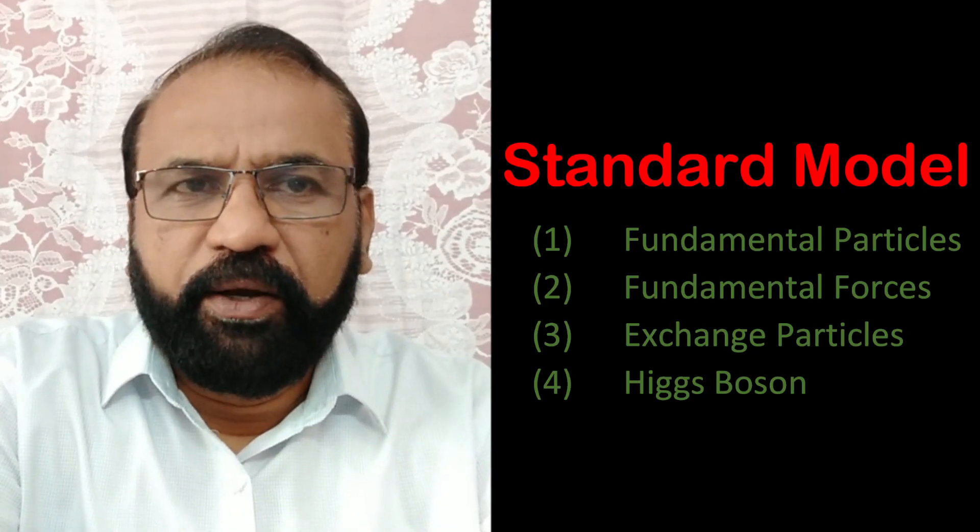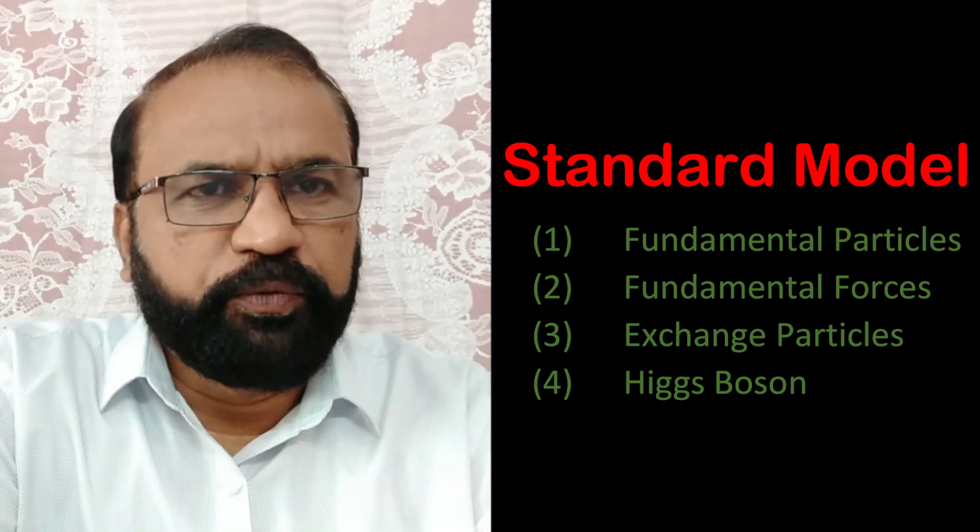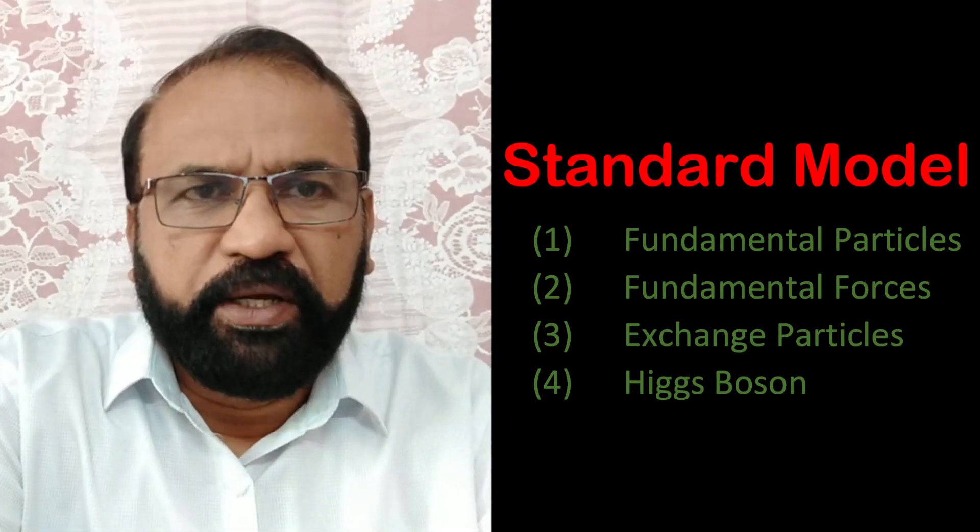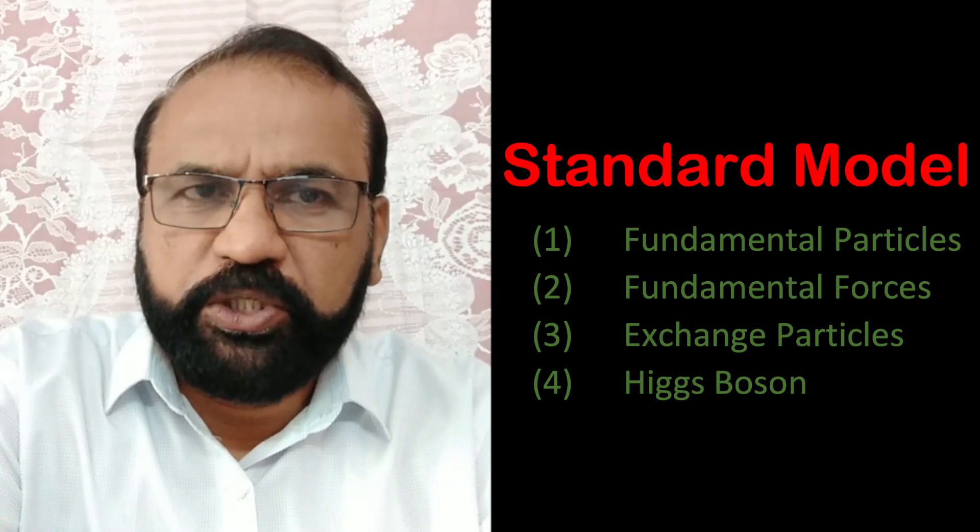What Peter Higgs did was to solve a truly fundamental problem in physics: how do fundamental particles acquire mass? The standard model of particle physics explains how fundamental particles interact with each other and constitute the universe as we know it. As per this model, all matter is made of two types of particles — quarks and leptons.